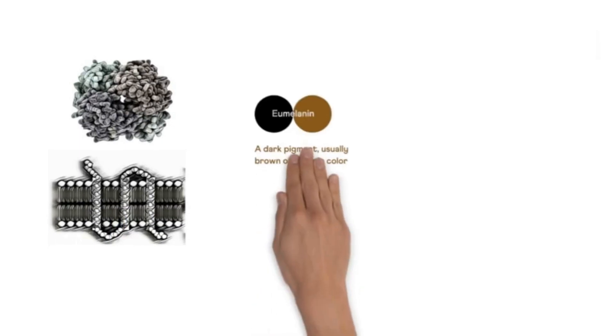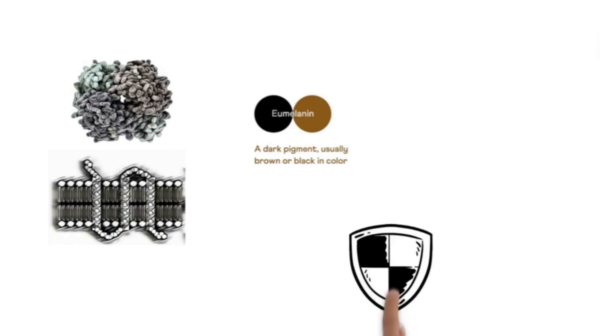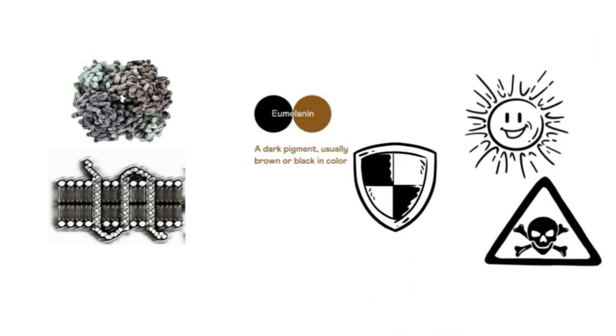The MC1R receptor binds to melanocyte-stimulating hormone, triggering the production of eumelanin, the dark pigment that protects us from harmful UV rays.